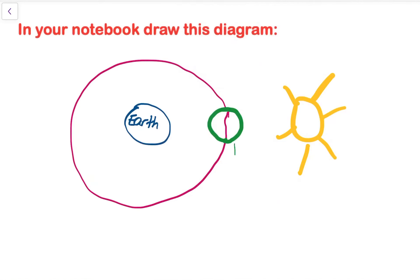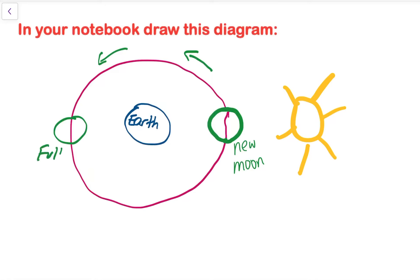This would be a new moon. And then if the moon continued to move around in its revolution and it was directly opposite that location — so here it would be sun, earth, and then the moon — the portion of the moon that is facing the earth is totally lit up. This would be the full moon position.